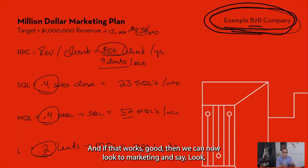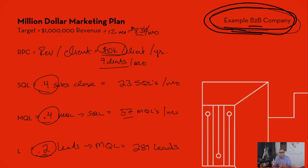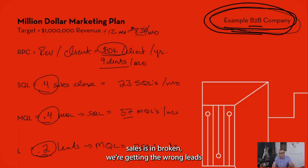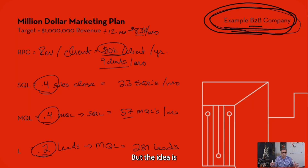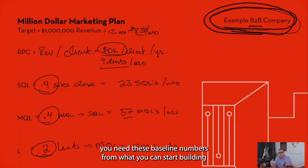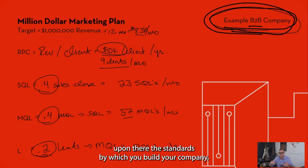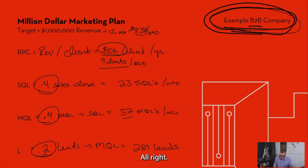And if that works, then we can look to marketing and say sales isn't broken — we're getting the wrong leads or the right leads or whatever. But the idea is you need these baseline numbers from which you can start building. They're the standards by which you build your company.